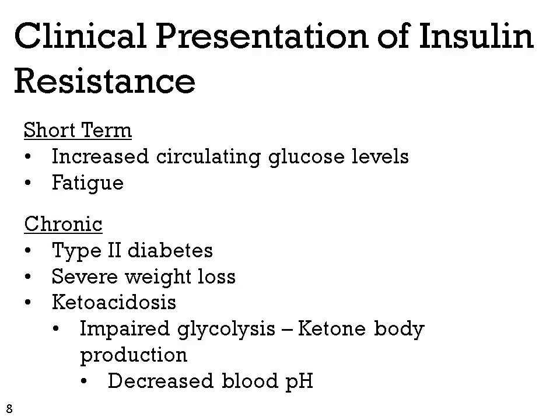Insulin resistance leads to impaired glycolysis, as you can no longer metabolize glucose. This causes the liver to produce ketone bodies, and as a result blood pH drops dramatically. This leads to confusion and other downstream effects that can result in death.